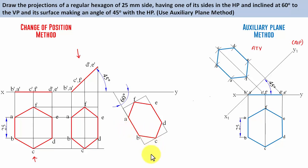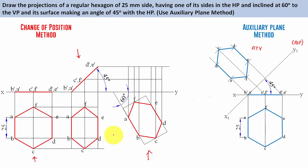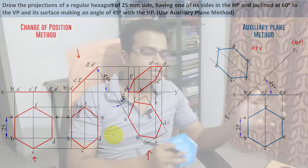We then look at this from the front to create the final front view — draw the lines, find the intersection points, and that's exactly what you get. That is the final front view obtained with the change of position method.